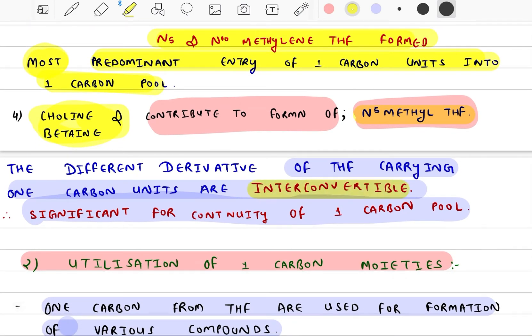These reactions are interconvertible. What is the significance? Continuity of the one carbon pool should be maintained. It should not happen that if the whole reaction shifts to one side, it cannot come back, and one carbon metabolism would not be able to function properly.